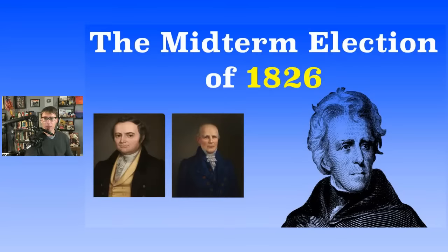In the House — where the people directly elect representatives — it's a little different. There were 213 seats total; 107 needed for a majority. The Jacksonians did not have power in the House before — the anti-Jacksonians did. But after 1826, the Jacksonians won a clear majority, getting 113 seats.